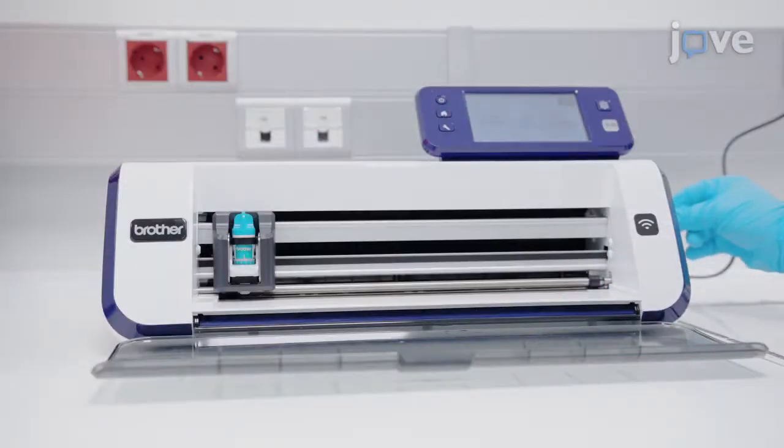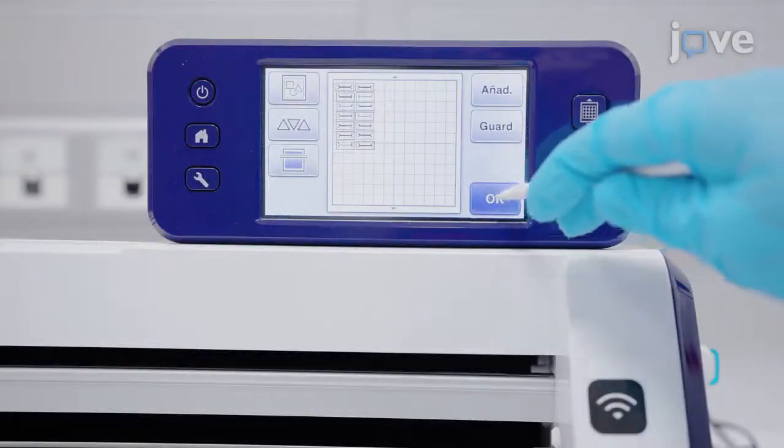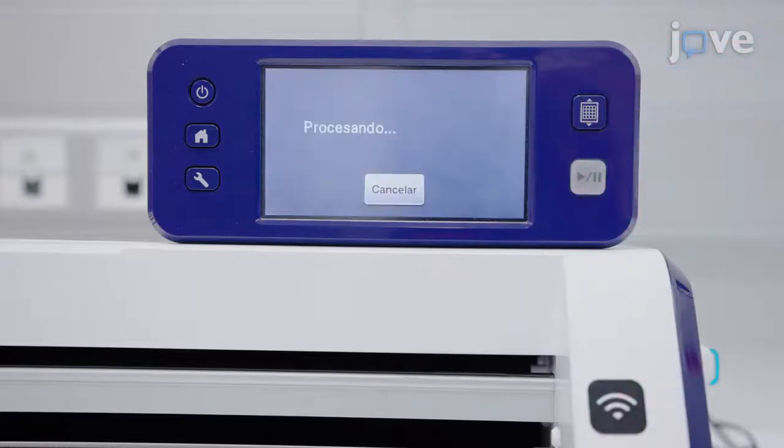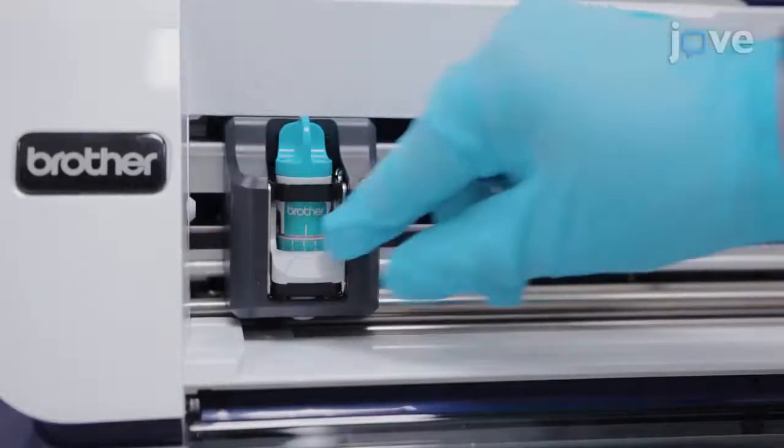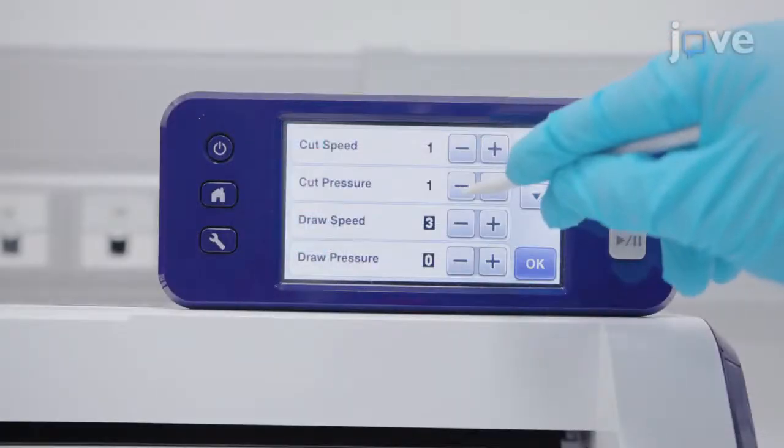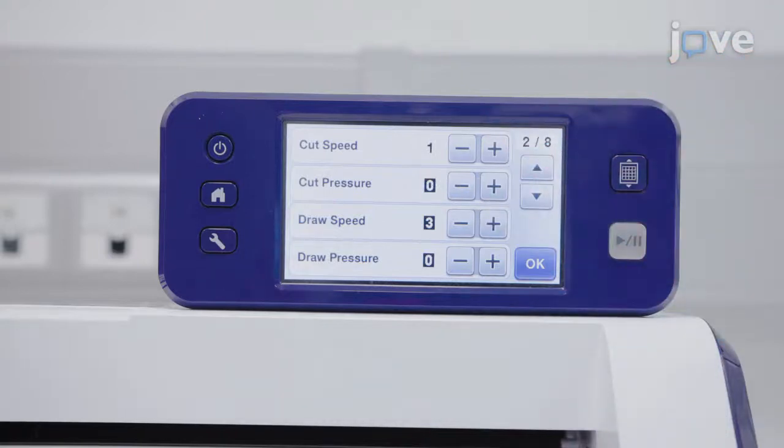Using a USB drive, upload the .svg file to the edge plotter and set the cutting parameters as cutting pressure at level 0, cutting blade at level 3 and level 1 for the cutting speed.